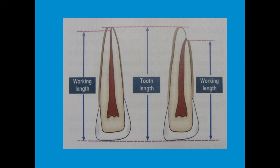The other terminology you should be aware of is working length, which we will cover in detail later. Broadly, the working length is the distance from the incisal reference point to the point where we should end our obturation. It can vary — the working length of one tooth differs from another as the apical foramen position differs.